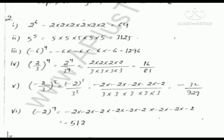In question number 2, you have to find the value. The first part is 2 raised to the power 6, so you write 2 six times and then multiply. The answer is 64. All parts of the question are solved the same way.